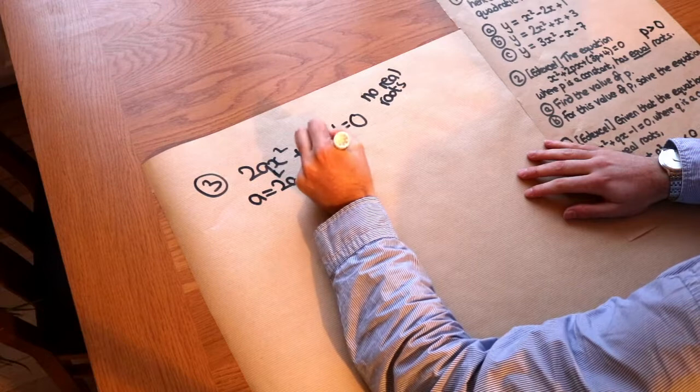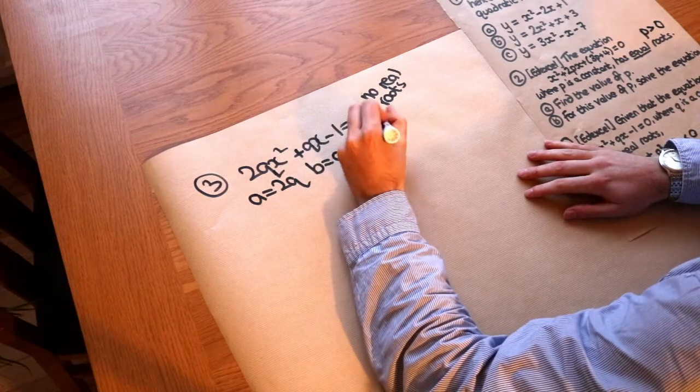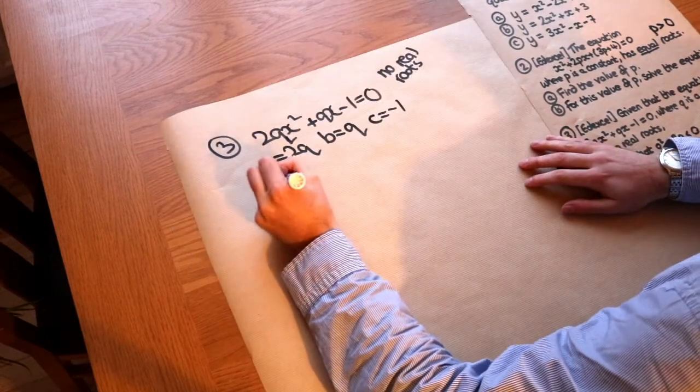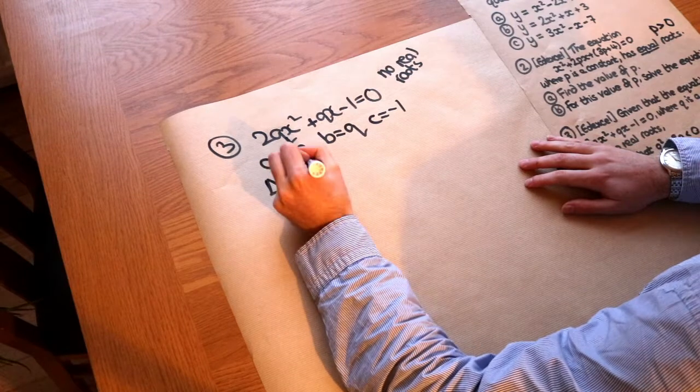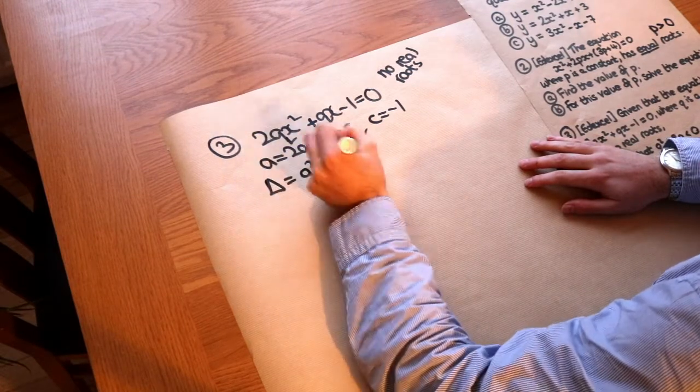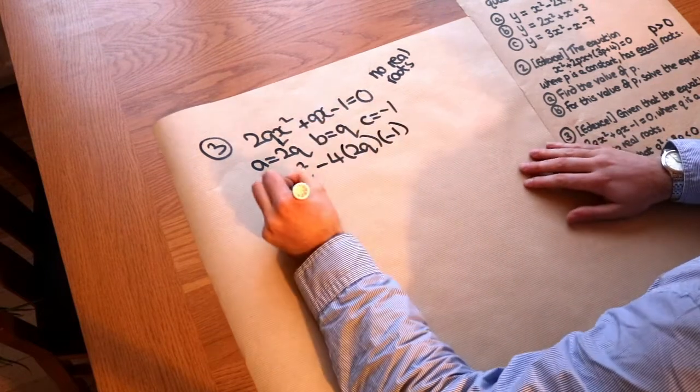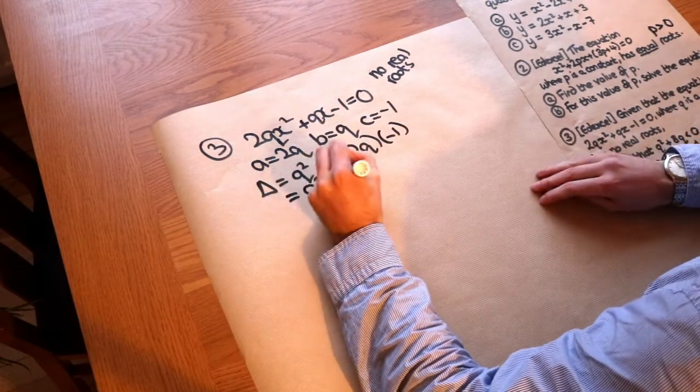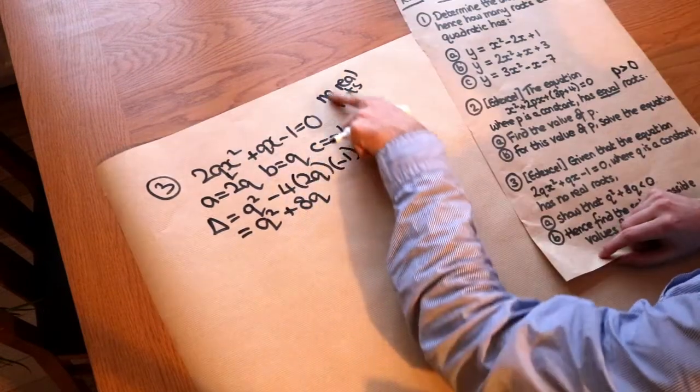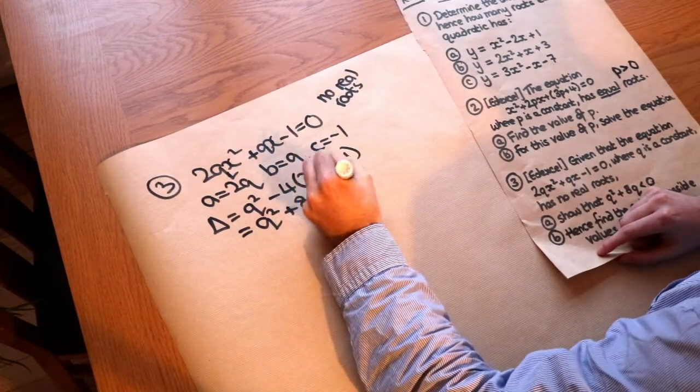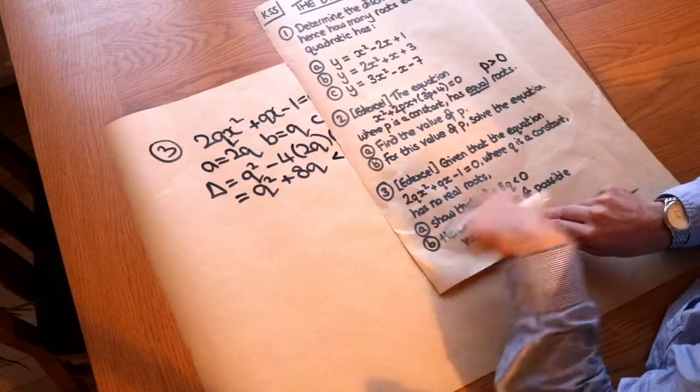So let's do our usual thing. We know the a here is 2q. The b here is q. And the c is -1. And the discriminant would be b², which is q² minus 4 × a × c. And that is equal to q² + 8q. Now we know when we have no real roots, the discriminant is less than 0. And therefore, we have answered part a. We wanted to show that this inequality holds.